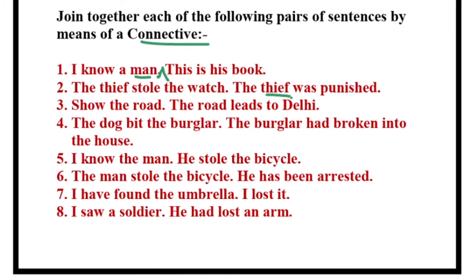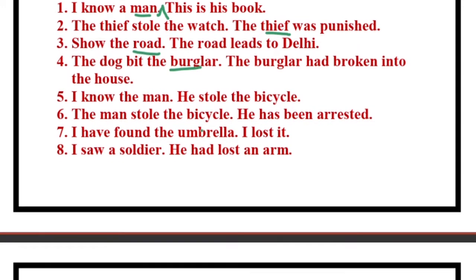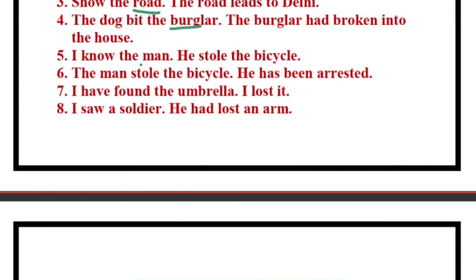Number three: 'Show the road / The road leads to Delhi' — non-living thing: 'Show the road that leads to Delhi.' Number four: 'The dog bit the burglar / The burglar had broken into the house' — burglar is a living thing: 'The dog bit the burglar who had broken into the house.' Number five: 'I know the man / He stole the bicycle' — living thing: 'I know the man who stole the bicycle.' Number six: 'The man stole the bicycle / He has been arrested' — 'The man, who stole the bicycle, has been arrested.'